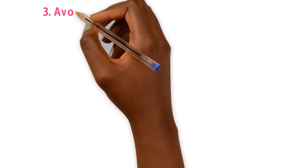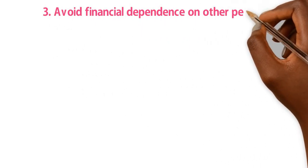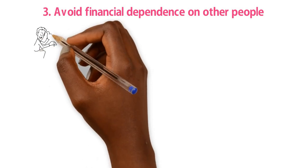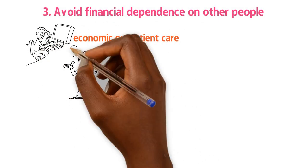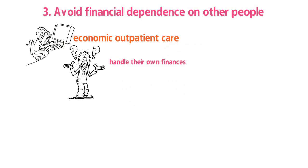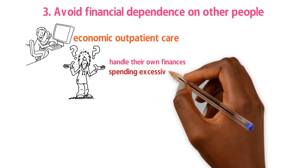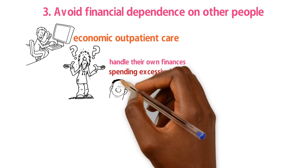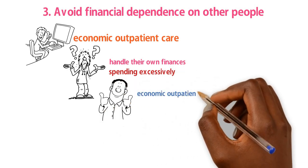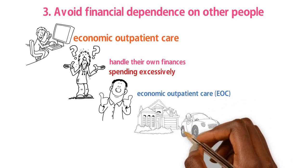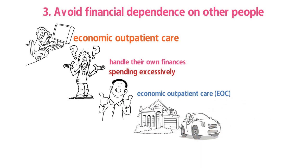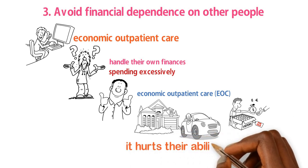Rule 3: Avoid financial dependence on other people. This is what we call economic outpatient care. You know how rich kids typically can't handle their own finances and never have to worry about spending money excessively? That's what economic outpatient care, or EOC, is all about. As much as affluent parents mean well when they support their children with their own hard-earned money, the reality is it hurts their ability to handle money.